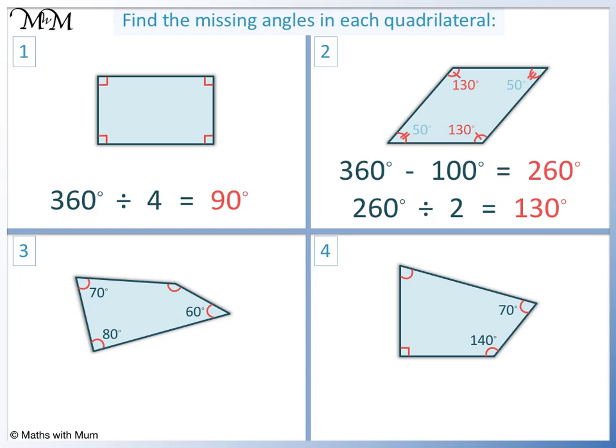Question 3. We will add up the angles and subtract them from 360 degrees. 70 plus 80 equals 150 plus 60 equals 210. 360 minus 210 equals 150. The missing angle is 150 degrees.